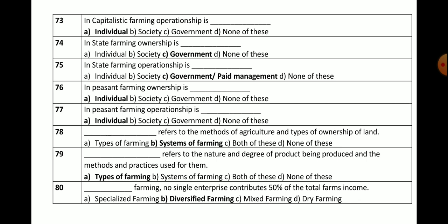Question numbers 74 and 75: In state farming, ownership is by the government. Operationship is by government officials or by paid management. In state farming, operationship is by government or by paid management.